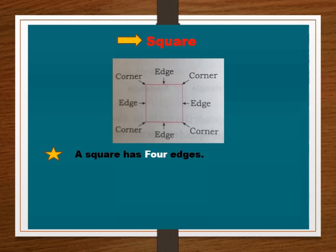How many corners does a square have? A square has four edges. Chowkonala chaar kopre ahi.